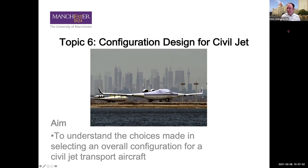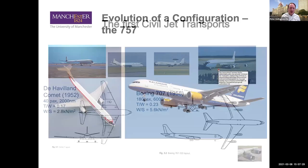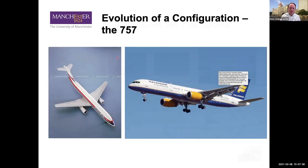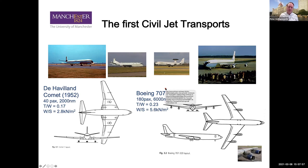First question: what commercial aircraft introduced the two standard configurations we see today? The two standard configurations are the engines under the wing, and the aircraft with the engines at the back of the fuselage. Going back in time, the de Havilland Comet does not have this configuration — its engines are buried in the wing, much closer to old piston propeller transports. The Boeing 707 is the progenitor of the modern underwing engine configuration, so those 95% of you who put Boeing 707 were correct.